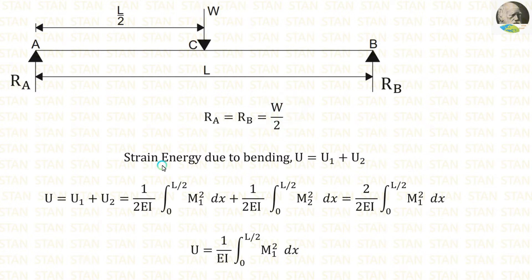Now, let us calculate the strain energy. To calculate the strain energy, we have to make two sections, one before the point load and one after the point load. So, let us separate the strain energy into two parts, U1 and U2. The total strain energy will be equal to U1 plus U2.